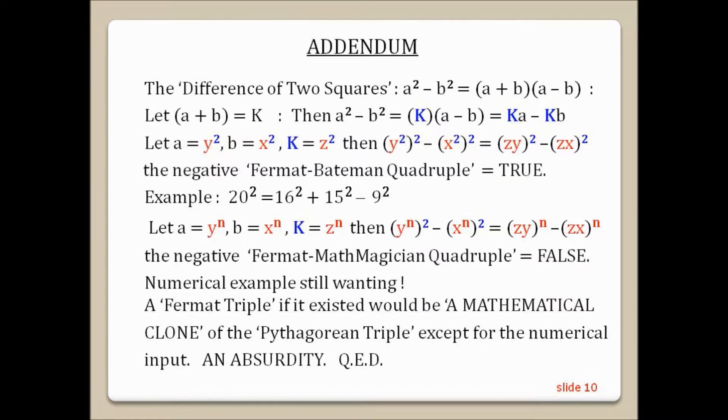A shorter addendum. The difference of 2 squares. a squared minus b squared equals a plus b times a minus b. Where a plus b equals k. Then a squared minus b squared is equal to k times a minus b is equal to ka minus kb.